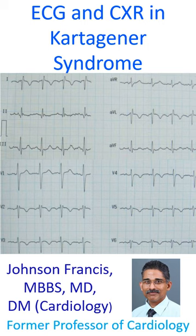Negative P wave, QRS complex, and T wave in lead I, rightward QRS axis, and regression of QRS amplitude from V1 to V6 — as the heart is on the opposite side — are the features of mirror image dextracardia in Kartagener's syndrome.